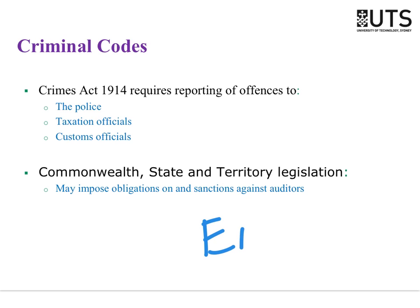A key example of when this happened is Enron. In Enron, the auditors knew that management were not doing something correctly, and not only did they not report it — they actually destroyed evidence. They started shredding the audit files and documents when they found out government officials were coming to check.